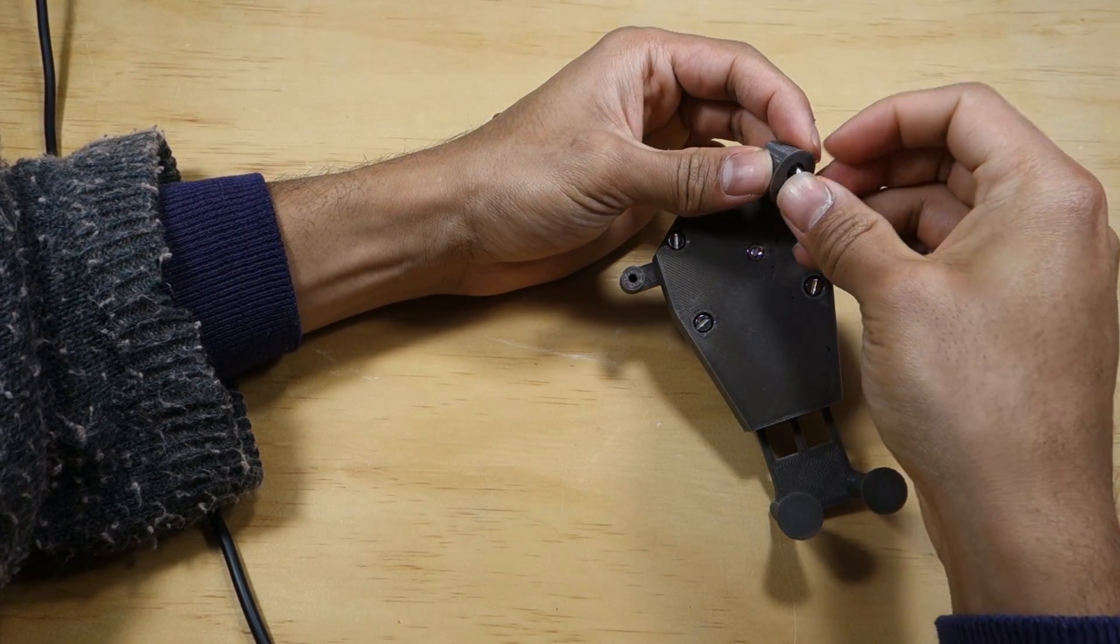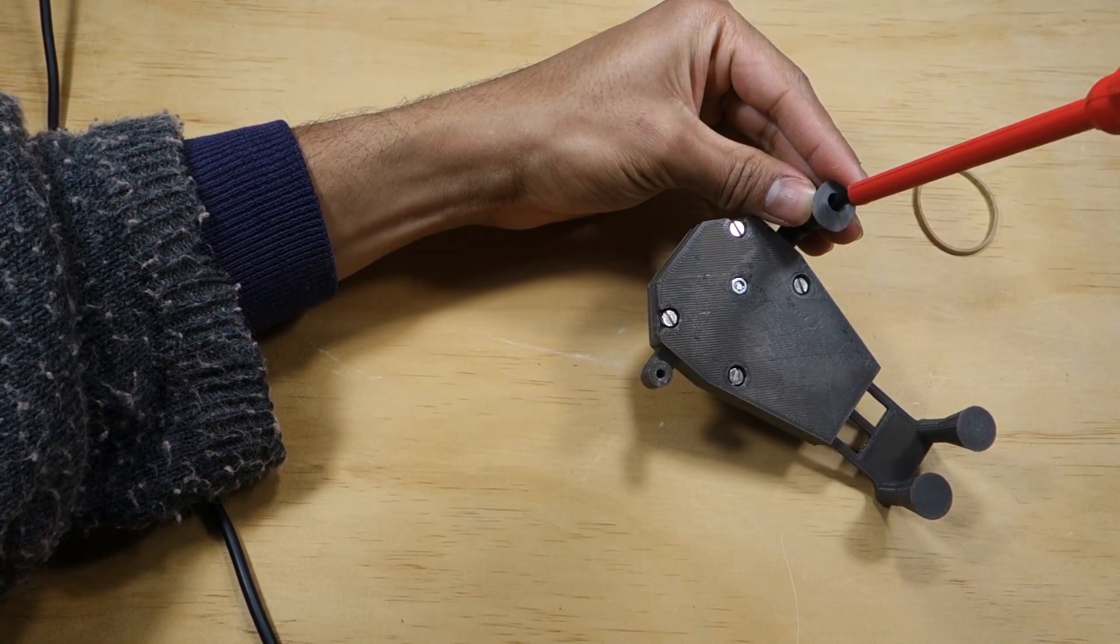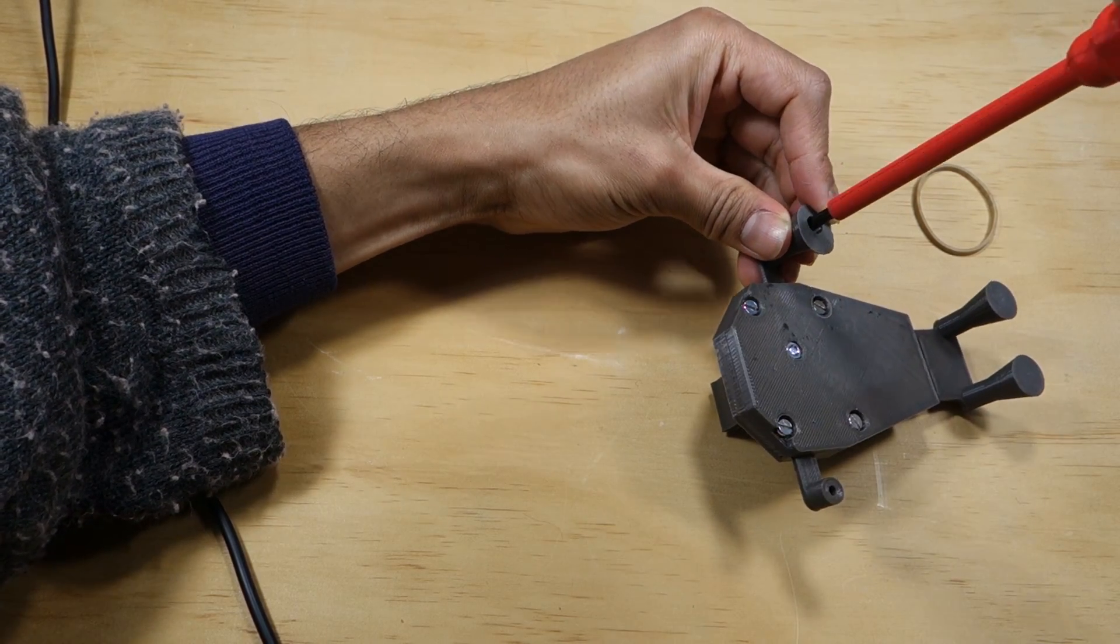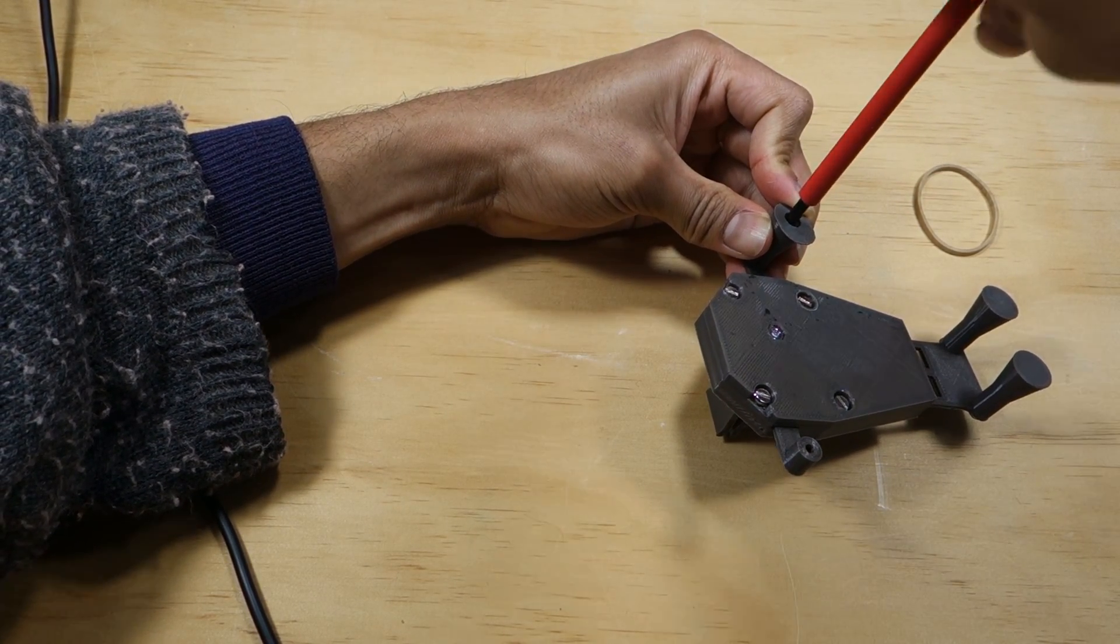Using two 10mm M3 screws, secure the other two conical posts onto the left and right arms, aligning the protrusion with the center of the front mount.